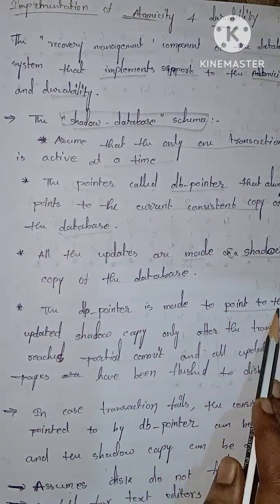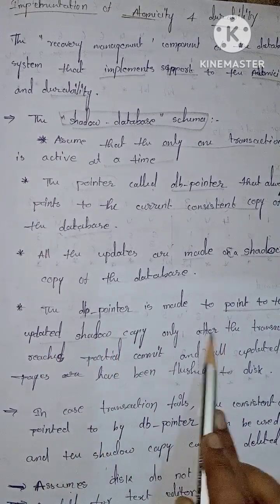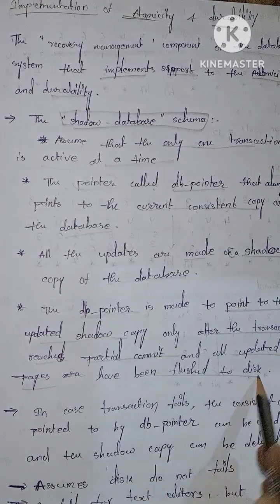The db-pointer is made to point to the updated shadow copy only after the transaction reaches partial commit and all the updated pages have been flushed to disk.